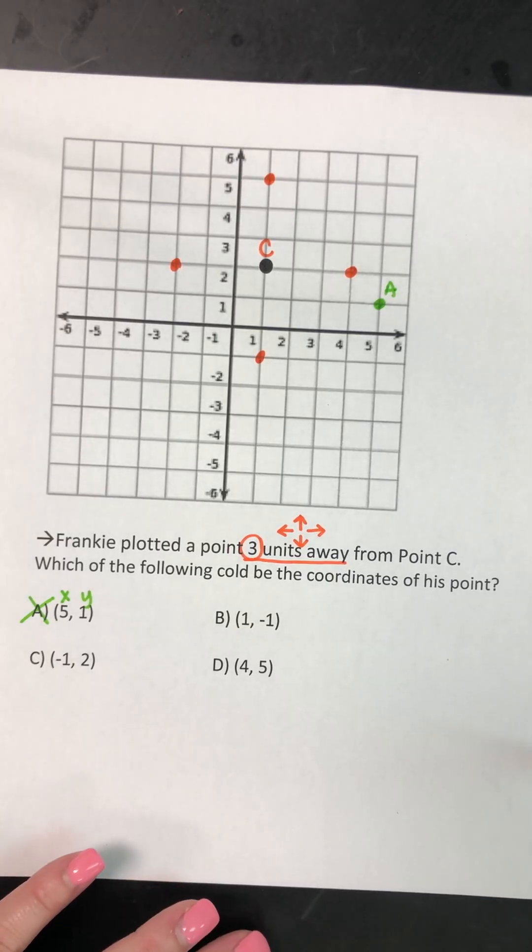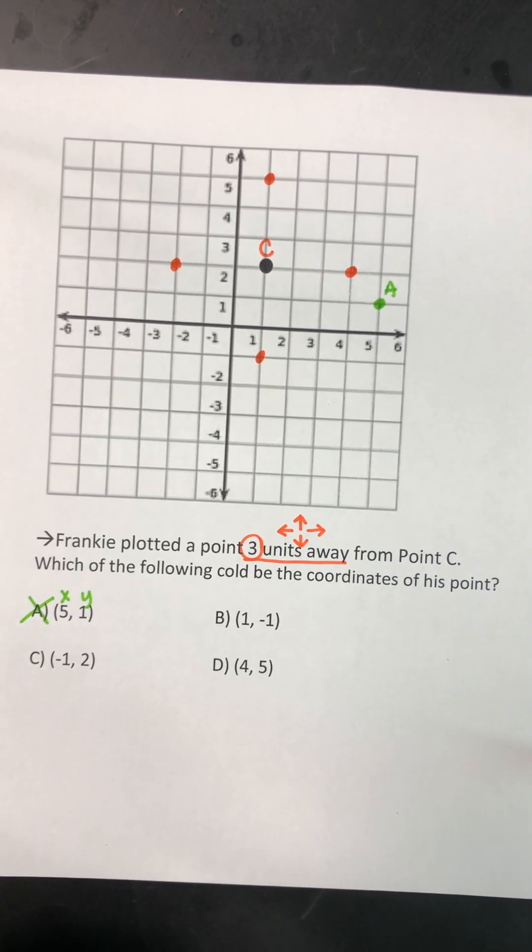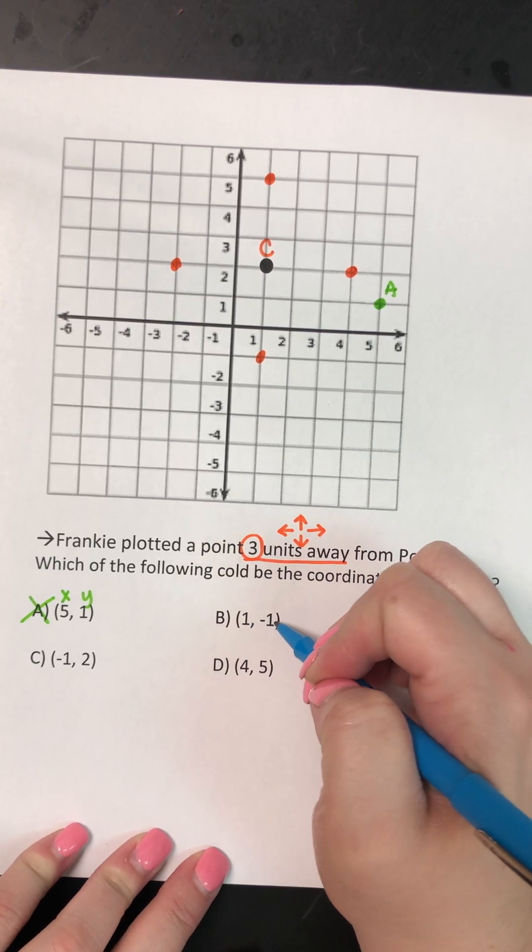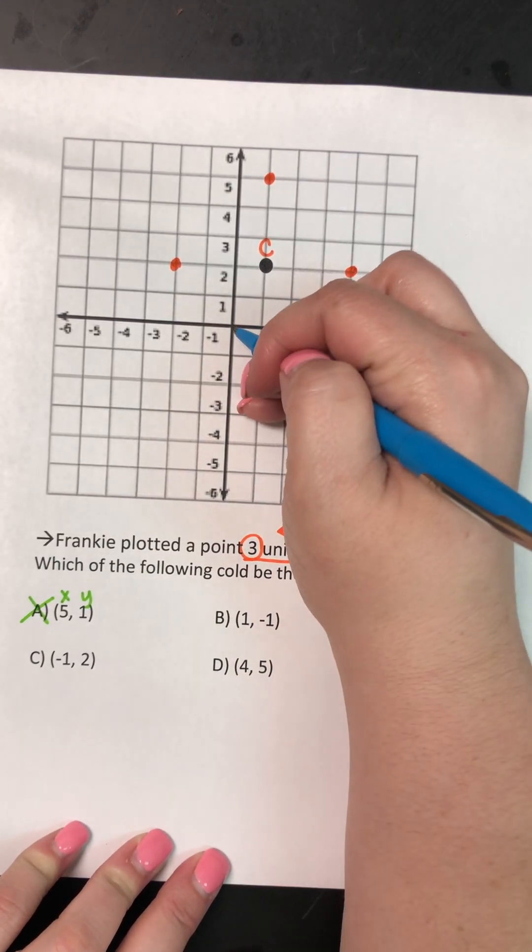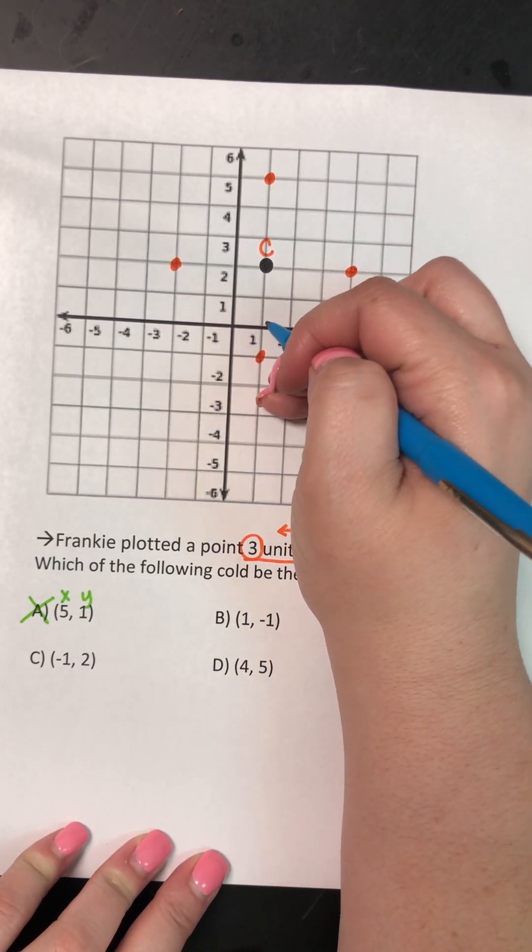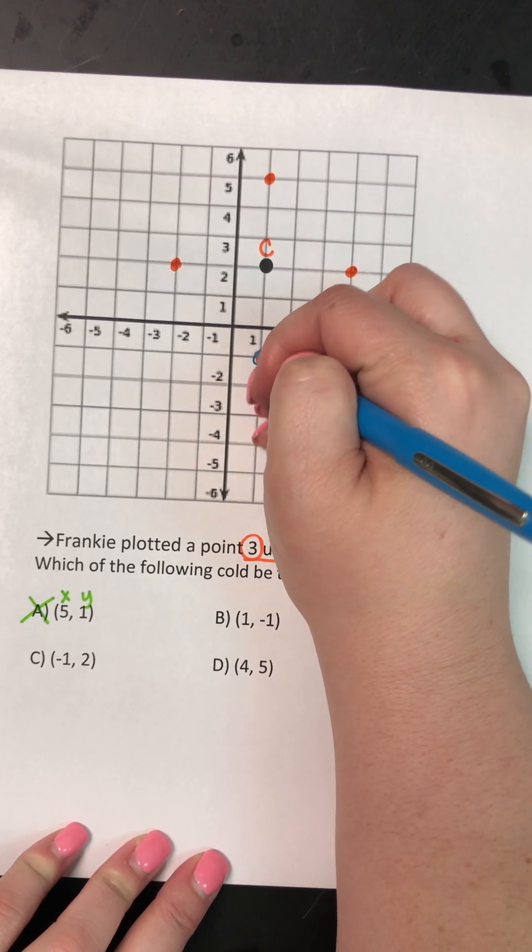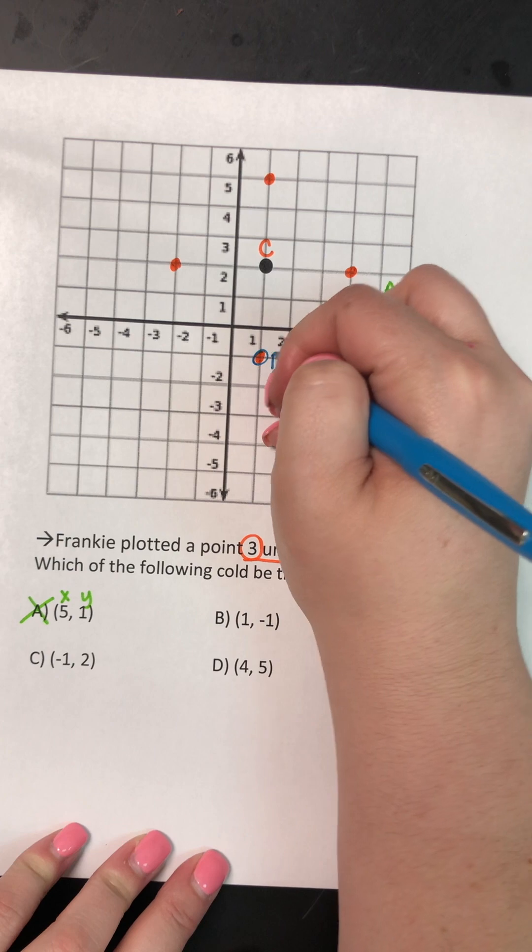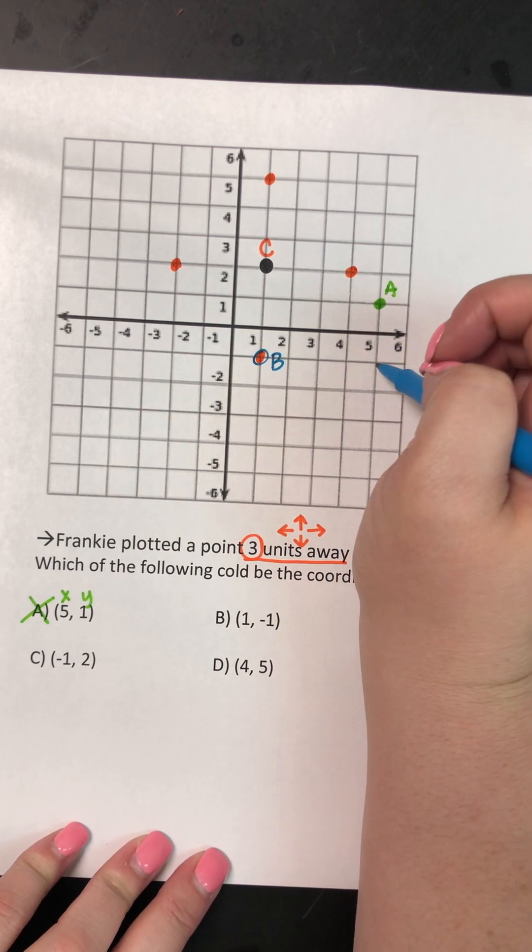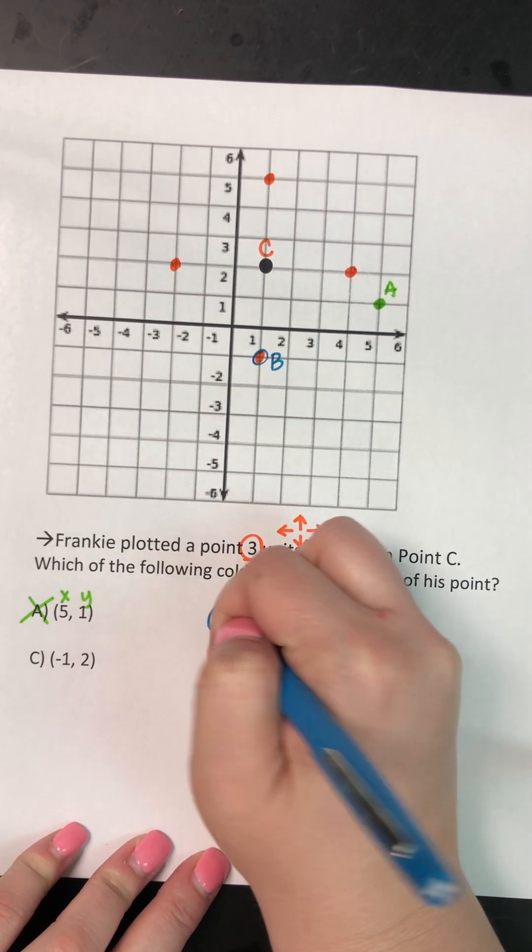I'm gonna try point B. So point B is positive one, negative one. So I'm gonna start at zero, zero, walk to positive one. And then I'm gonna go down to negative one. Well, that looks like it matches my other point. So point B is a really good answer.